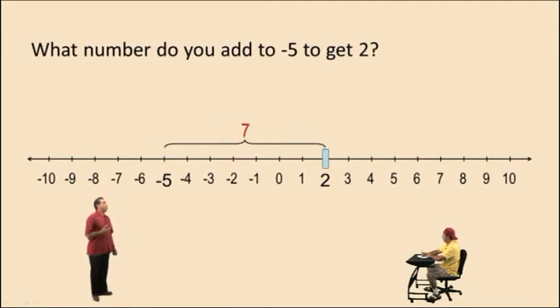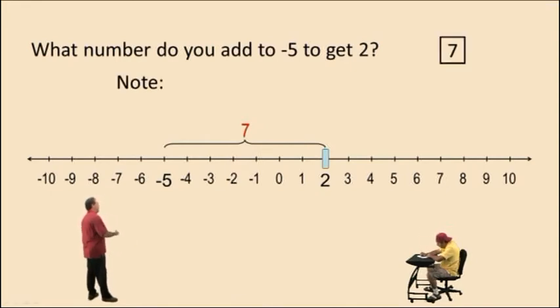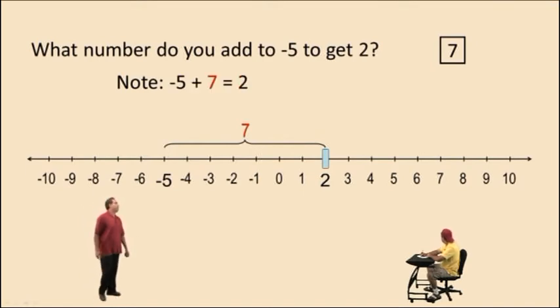Therefore, what number do you add to negative 5 to get 2? It's positive 7. And negative 5 plus 7 is in fact positive 2. So we've answered this question.